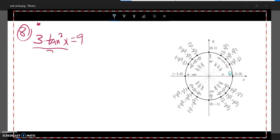Since that's three times tangent squared, I'm going to divide both sides by three. That leaves me with tangent squared x equals three, and I'm going to square root both sides. When I pull that square root in, a plus or minus comes with it. Take careful attention to that.